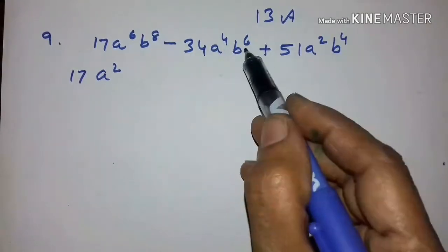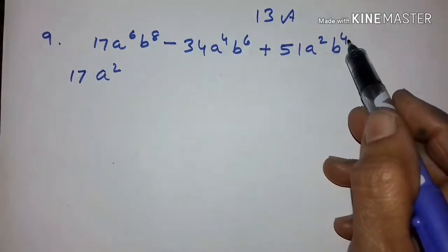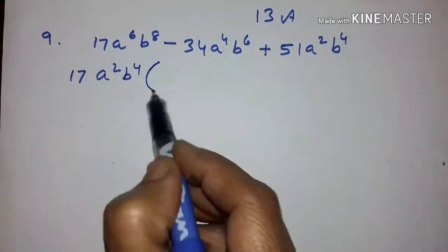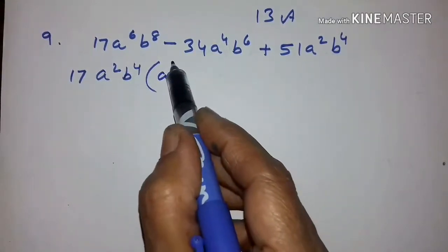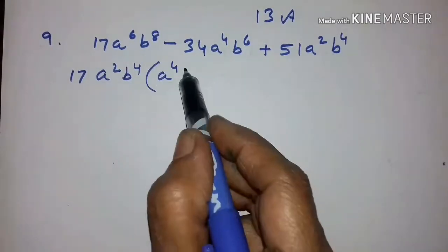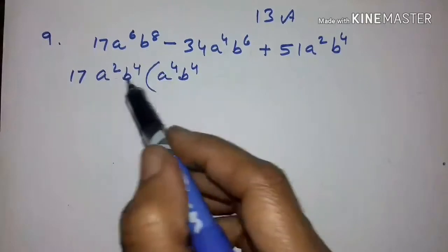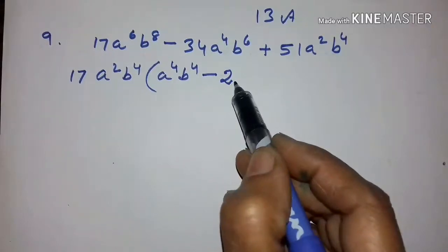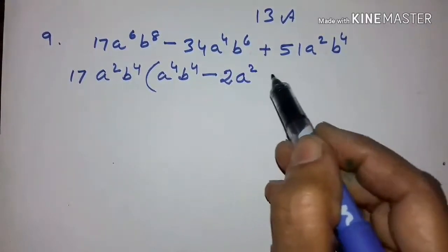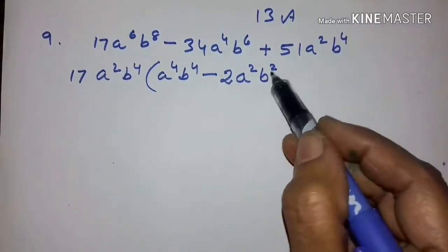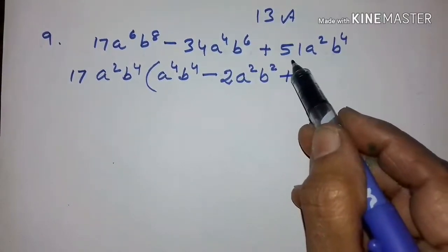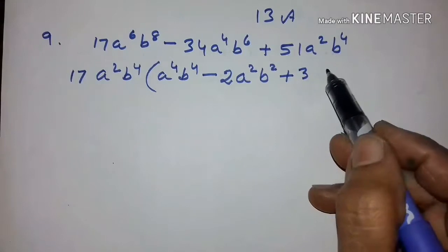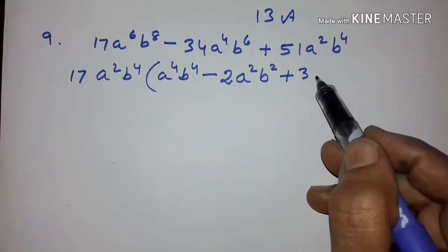Now for B: b raised to the power of 8, b raised to the power of 6, and b raised to the power of 4 — out of these, b to the power of 4 is common. So taking out 17a squared b to the power of 4, what remains is: a to the power of 4 (since a squared has gone out), minus 2a squared b squared (17 has gone out so 2 remains), plus 3 (17 has gone out, a squared and b to the power of 4 have gone out, only 3 remains).